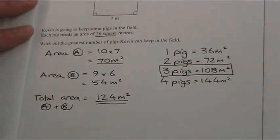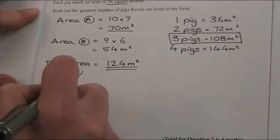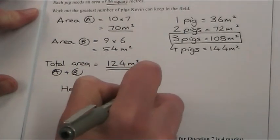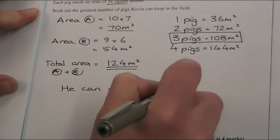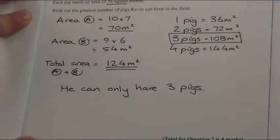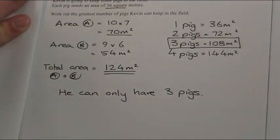I'm going to circle that, and I'm going to write a sentence: He can only have 3 pigs. And that is how you secure all 4 marks. Even if you wrote 3 with none of this, you'd get 0 marks. So it's very important you understand my working.